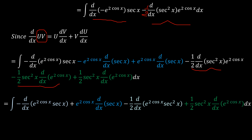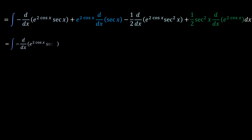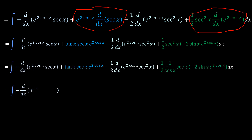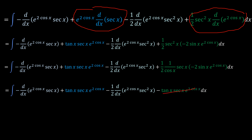Continuing, we show that these terms cancel. We expand by differentiating sec(x), which gives tan(x)·sec(x), and differentiating e^(2cos x) gives negative 2sin(x)·e^(cos x). Also, sec²(x) equals 1 over cos(x) times sec(x). As we continue, we get a negative tan(x)·sec(x)·e^(cos x), which cancels with the corresponding term, leaving us with the integration of the derivative expressions only.